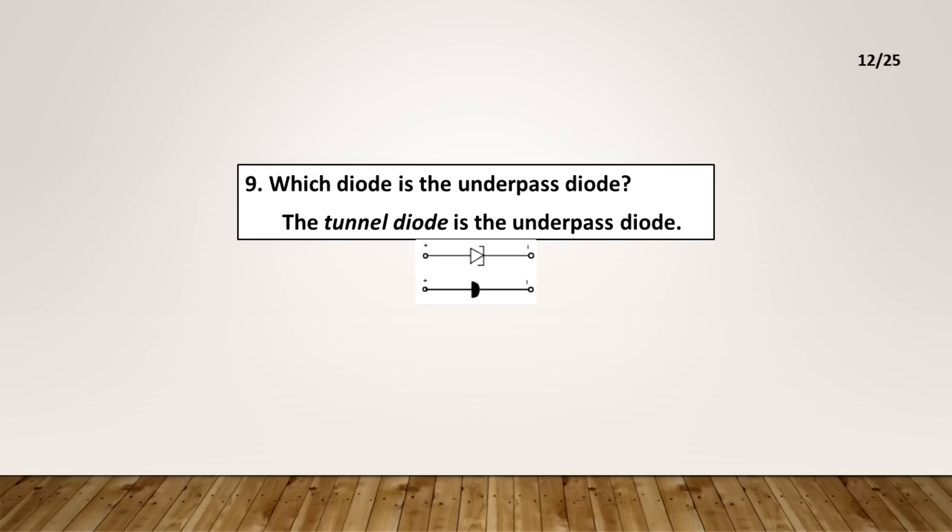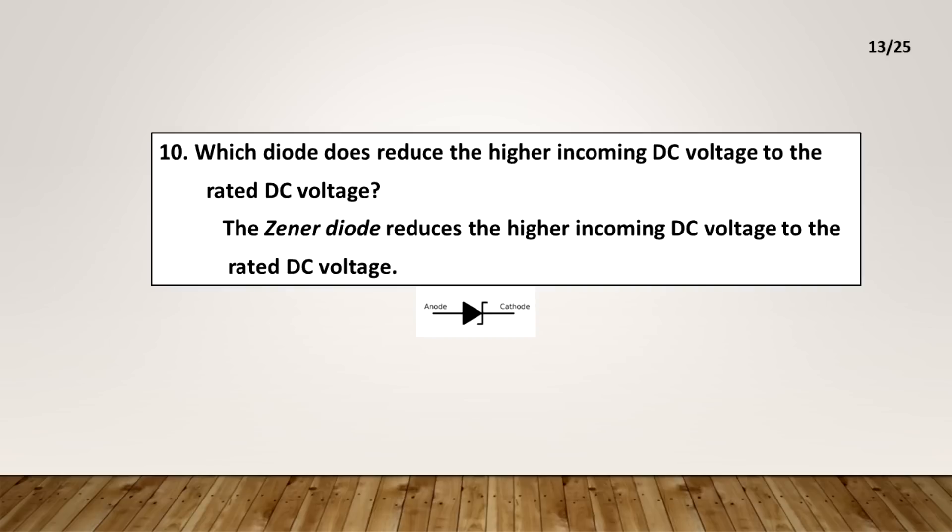Which diode is the underpass diode? The tunnel diode is the underpass diode. Which diode does reduce the higher incoming DC voltage to the rated DC voltage?